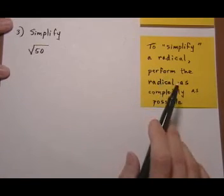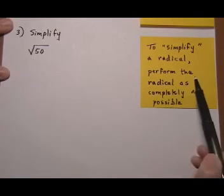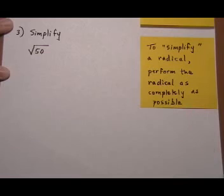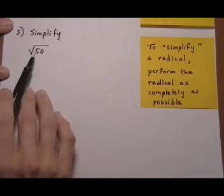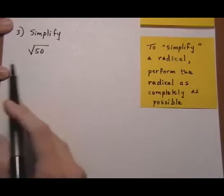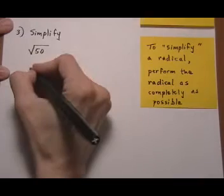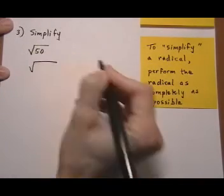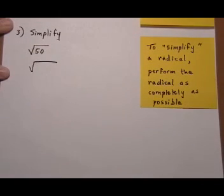To simplify a radical means to perform the radical as completely as possible. In other words, if we have √50, we want to take as much of a square root as possible. But in order to do that, we need to see what factors 50 is made out of.